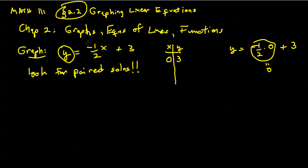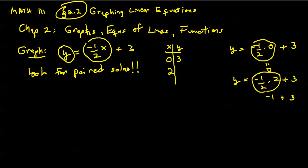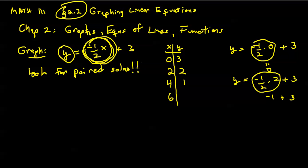If x is 0, y equals minus one-half times 0 plus 3, which gives y equals 3. So we've established one pairwise solution. It takes two points to determine a line, but we usually go for at least three in case a mistake is made. I'm going to pick multiples of 2. If x is 2, y equals minus one-half times 2 plus 3, which gives negative 1 plus 3 equals 2. If x is 4, 4 times minus one-half is negative 2, and negative 2 plus 3 is 1. If x is 6, 6 times minus one-half is negative 3, and negative 3 plus 3 is 0.